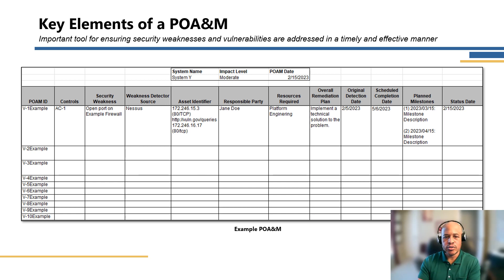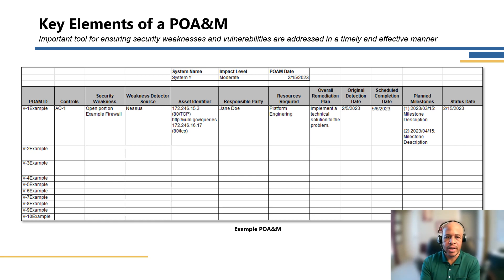Remediation plan is really key. Depending on the sophistication of the remediation effort, the remediation plan could be very detailed. Typically in the POAM it's high level — it defines the direction that will be taken by the relevant responsible party, which could include multiple organizations or teams, such as security engineering working with platform engineering to ultimately remediate the defined weakness.